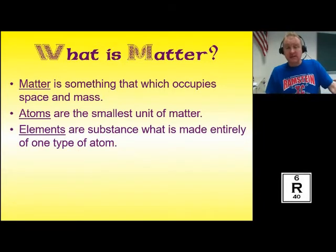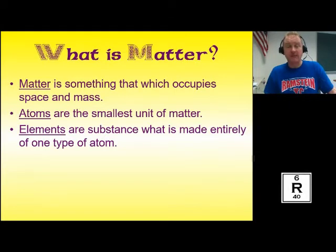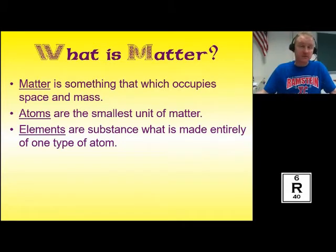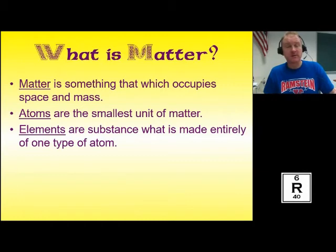An element is a substance that is made entirely of one type of atom. Atoms are the smallest unit. If you have a whole bunch of the same types of atoms, you have an element. These are all a group of atoms that are the same — that's elements. They have the same structure, same amount of protons in particular.